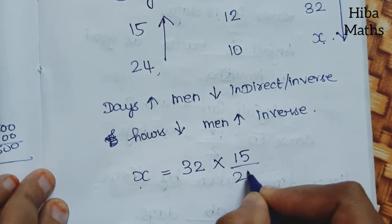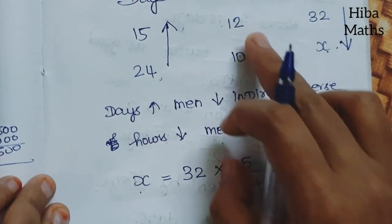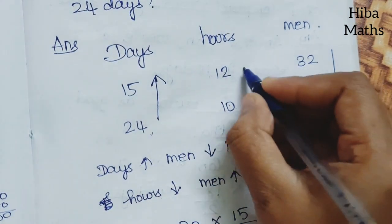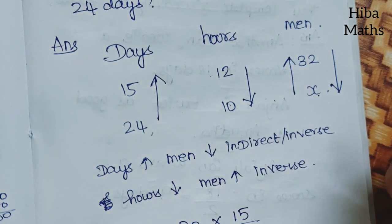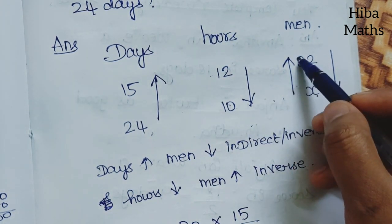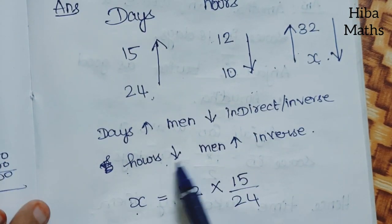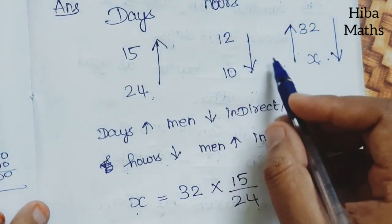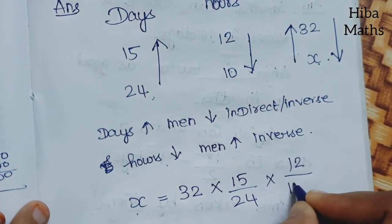15 divided by 24 — correct, direct is the same. Hours is less than 10 men. Hours is 10 men in the same way. Hours are in inverse proportion. Hours: 12 divided by 10.